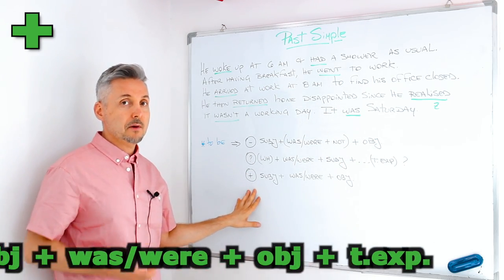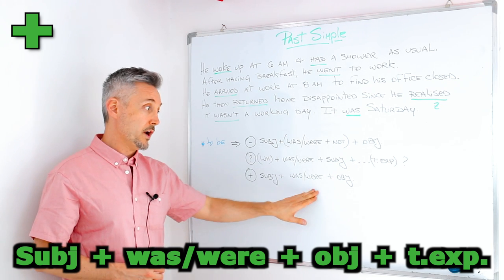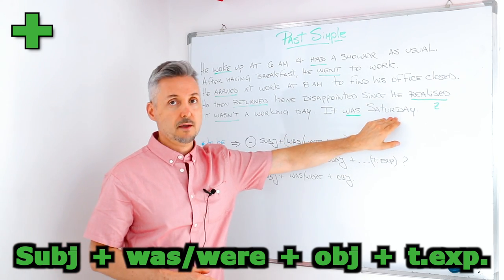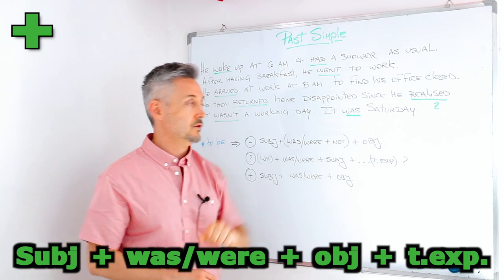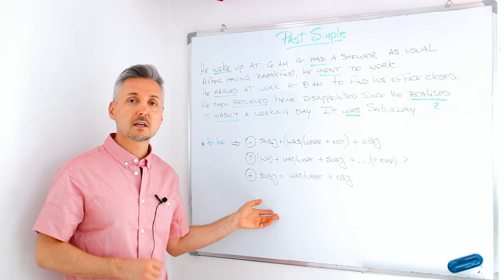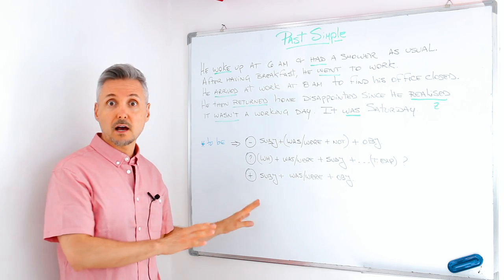And for a positive sentence. Subject plus was or were plus object. It was Saturday. So remember this part. The verb to be doesn't need the auxiliary did. It works by itself.